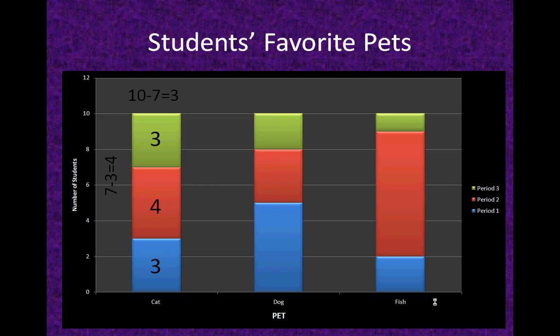Now let's move on to the dog column. You can see five people like dogs in period one. The red bar reaches eight, but you have to minus five, so three people like dogs in period two. And the green bar reaches ten, but you have to minus eight, so two people like dogs in period three.